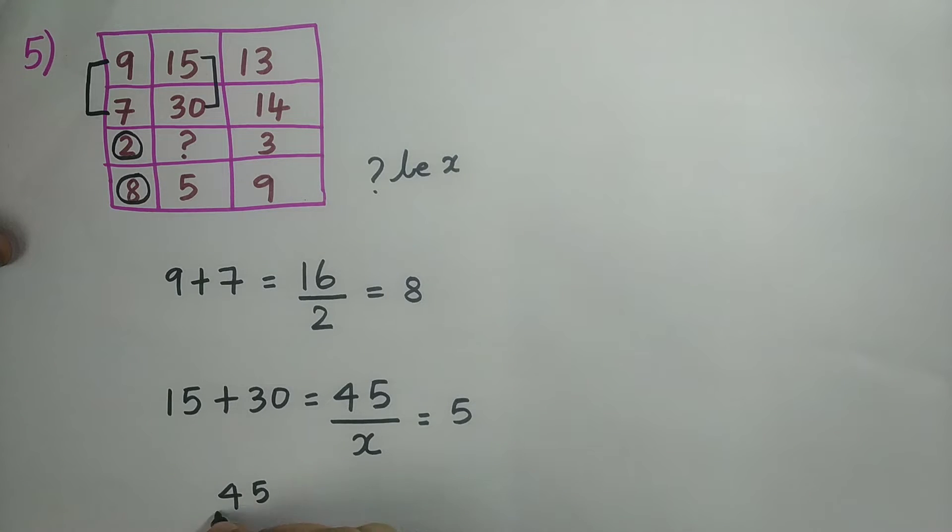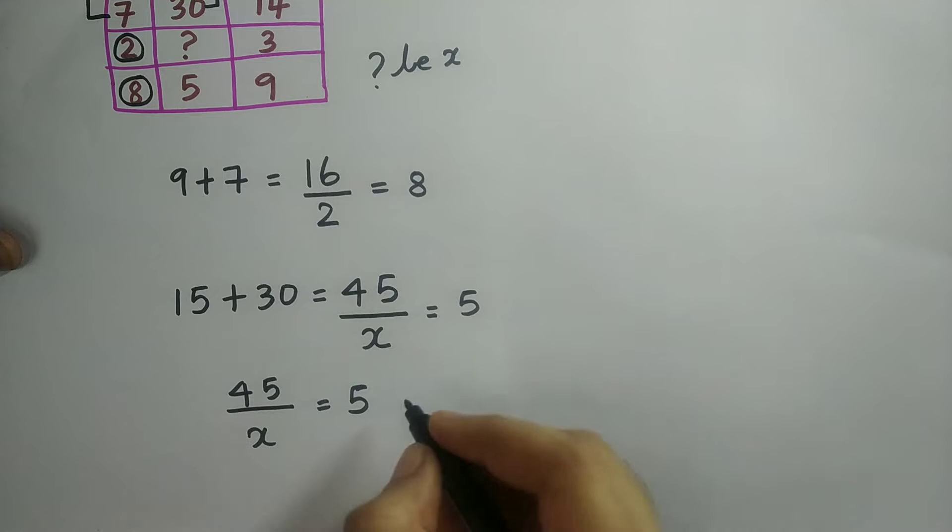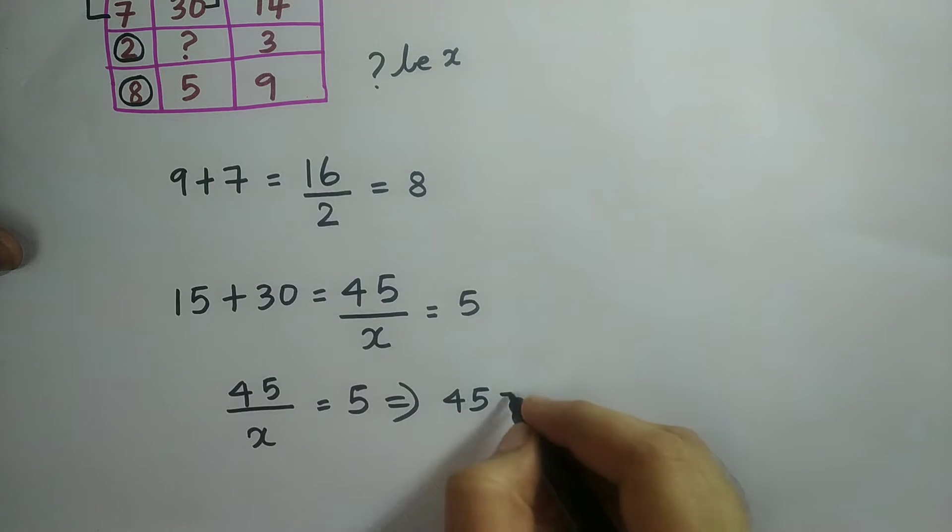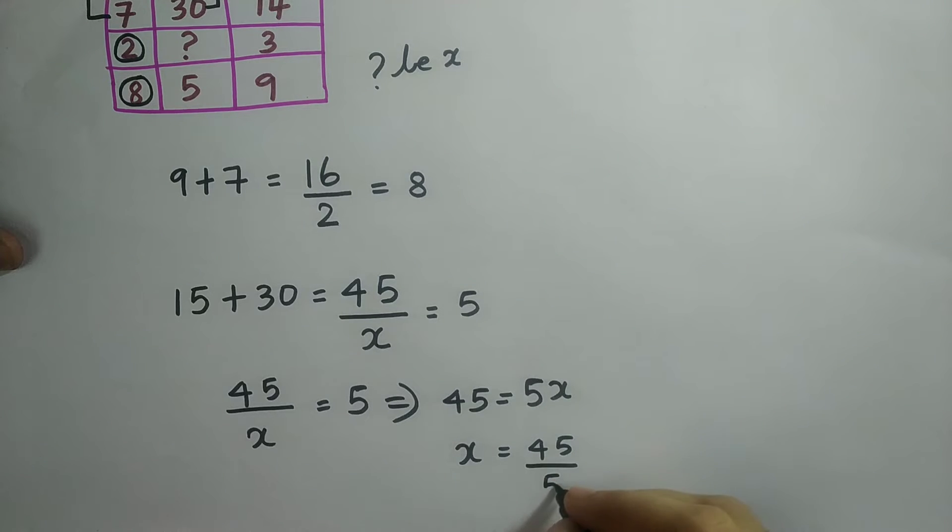So 45 by x is equal to 5. Therefore, 45 is equal to 5x. x is equal to 45 divided by 5 which is equal to 9.